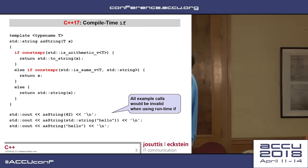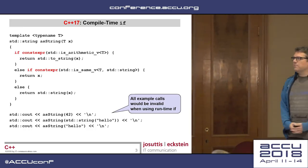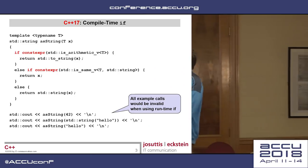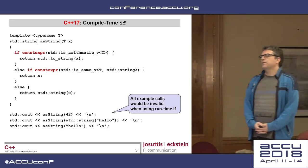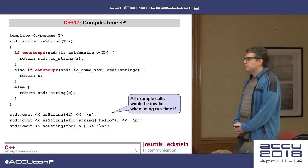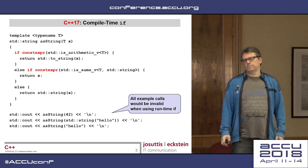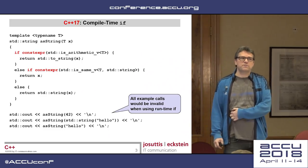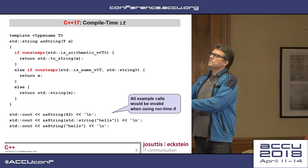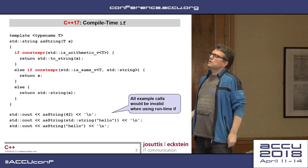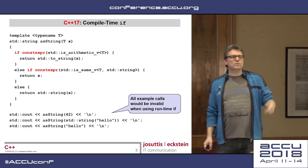Number two, compile time if. The next thing we have is now the ability inside a function to have a compile time switch between two different alternatives. And this is important if a runtime switch would not work, as in this example. It's not only because of performance, it's because sometimes it's not possible to use a runtime switch. Look at this code. I have here a function converting a passed argument t to a string, and I have different ways to do so.